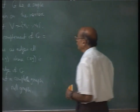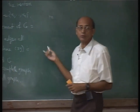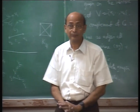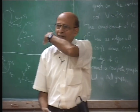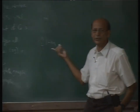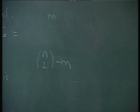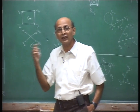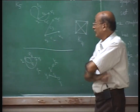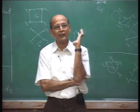In general, if I have a graph on n vertices with m edges, how many edges would the complement have? NC2 minus m. Because the total must add up to n choose 2 — every pair of distinct vertices is either an edge in the graph or in the complement, but not both.